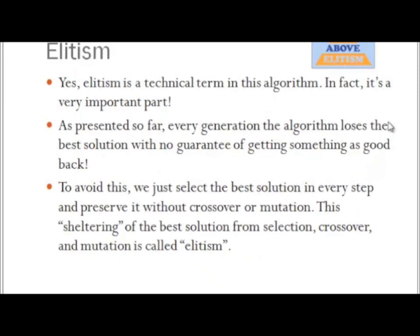Next, elitism — a technical term in this algorithm and a very important part. If you think about the algorithm as presented so far, each generation you are completely throwing away the old generation, including your best solution. The solution is simple: just save the best solution. Elitism is simply choosing your best solution, saving that chromosome somewhere separate, then performing all of your crossover, mutation, and parent selection. At the end, after all the crossover and mutation, you paste the best solution back in to make sure you do not get worse solutions over time.